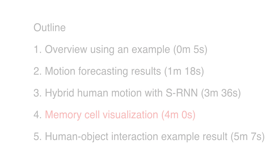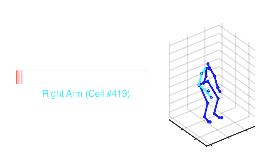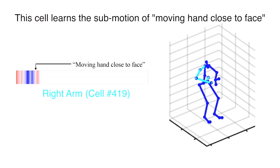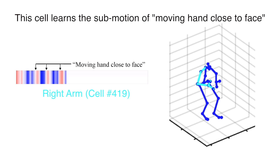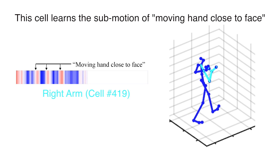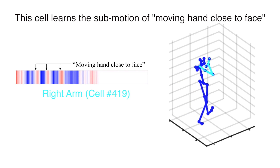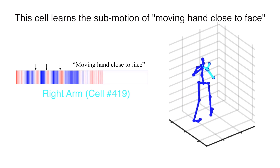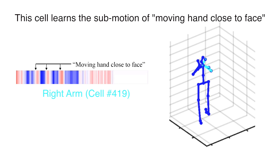We discovered that, interestingly, some cells in the LSTM were semantically interpretable. A particular cell in the LSTM modeling the arms fires whenever the subject moves his hand closer to the face. Such semantic interpretability was recently shown for natural language sequence modeling but not for videos or human motions.